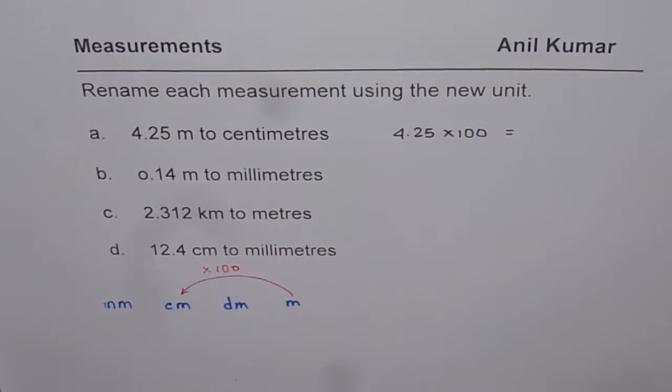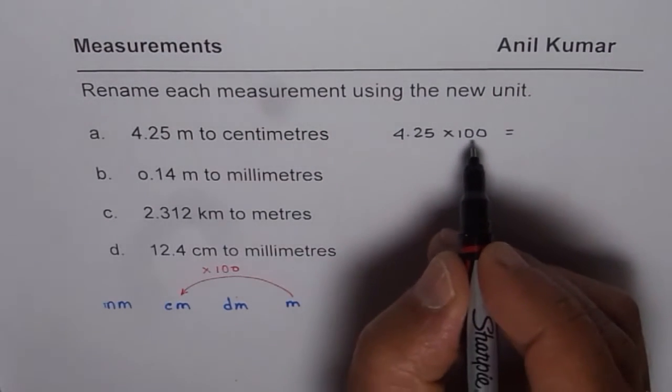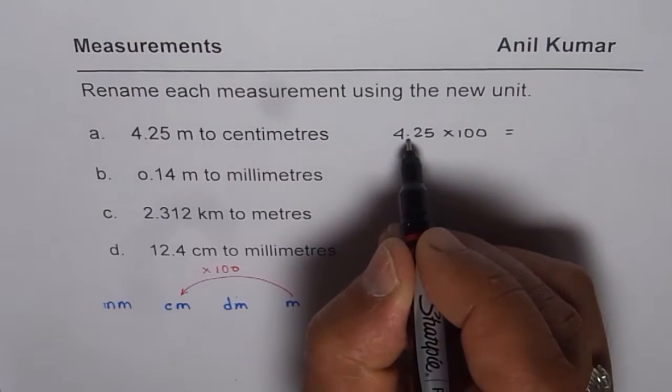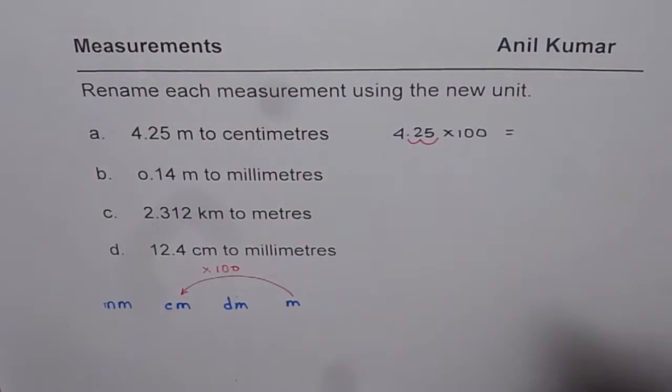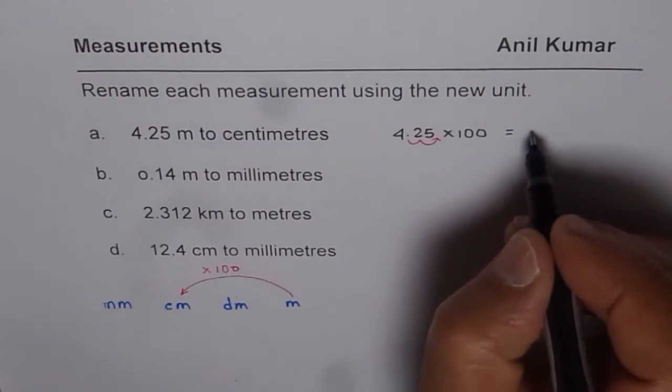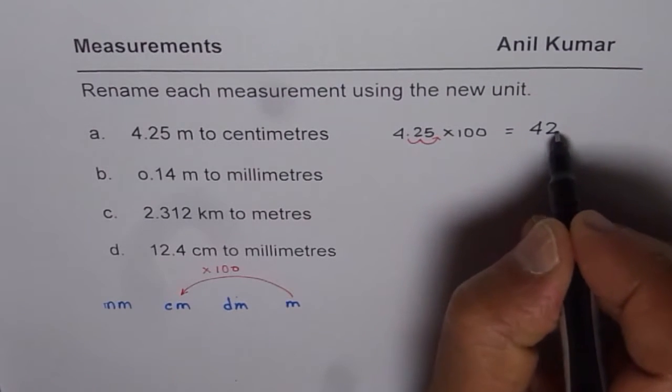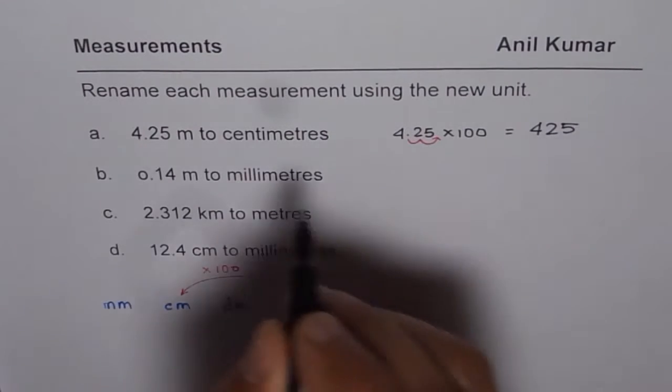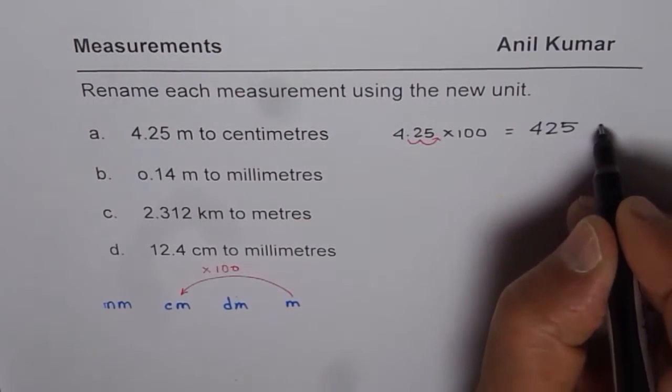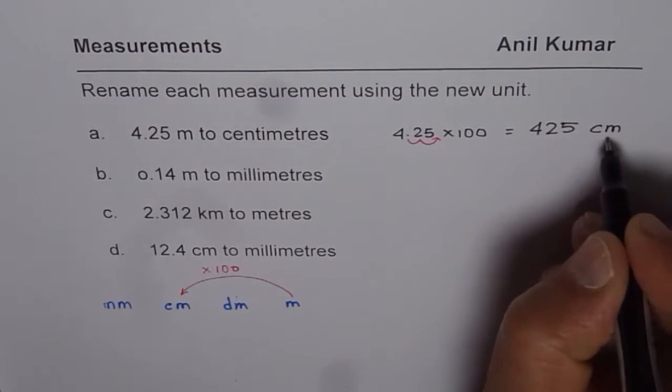425. So basically, multiplication by 100 will move the decimal two places to the right. So it will be 4.25. So we could write this as 425 and the units are now centimeters. We can write this as centimeters in short CM.